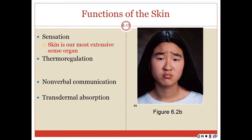Then we have sensation. The skin contains a variety of nerve endings for heat, cold, touch, texture, pressure, vibration, and tissue injury. Most sensory receptors are abundant on the face, palms, fingers, soles, nipples, and genitals. Relatively few receptors are on the back and in skin overlying the joints.